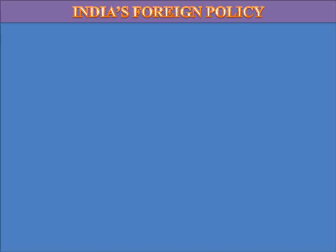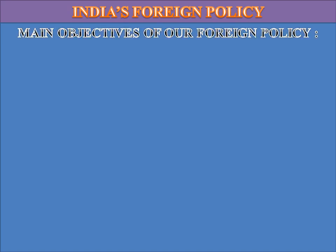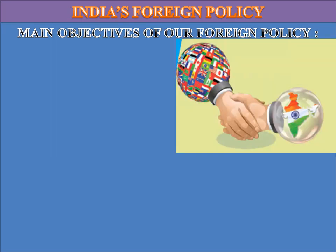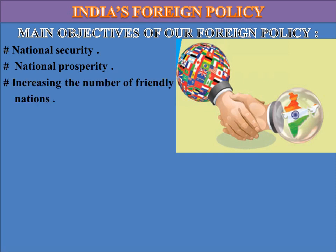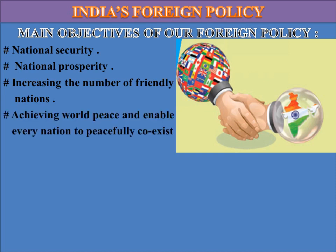Now we are going to learn about the main objectives of our foreign policy. The first one is national security. The next is national prosperity. The next is increasing the number of friendly nations. The next is achieving world peace and enabling every nation to peacefully coexist. The next is economic development.